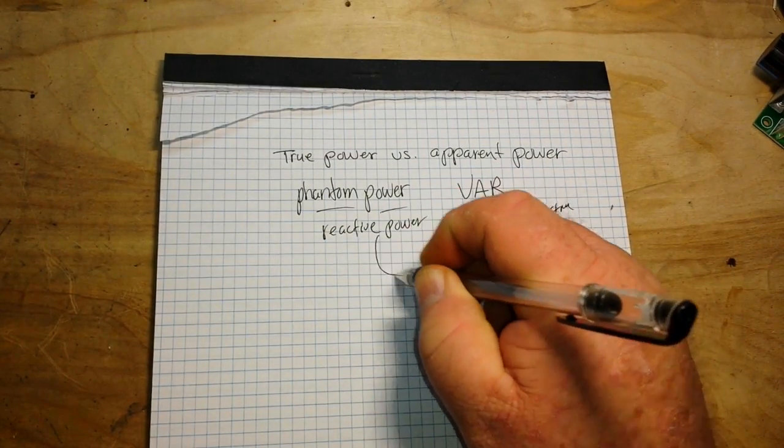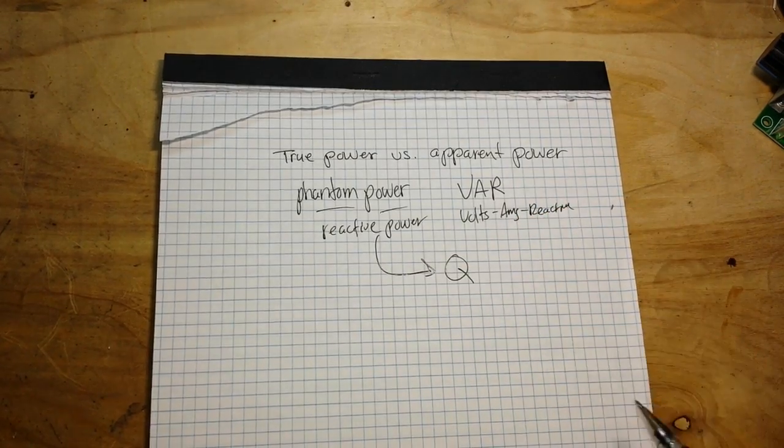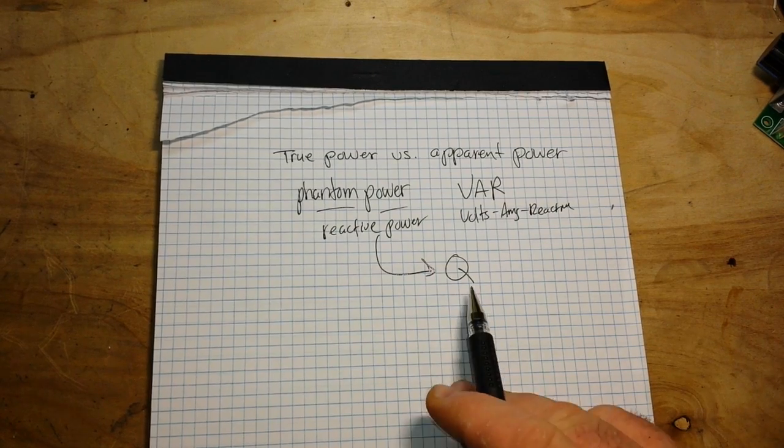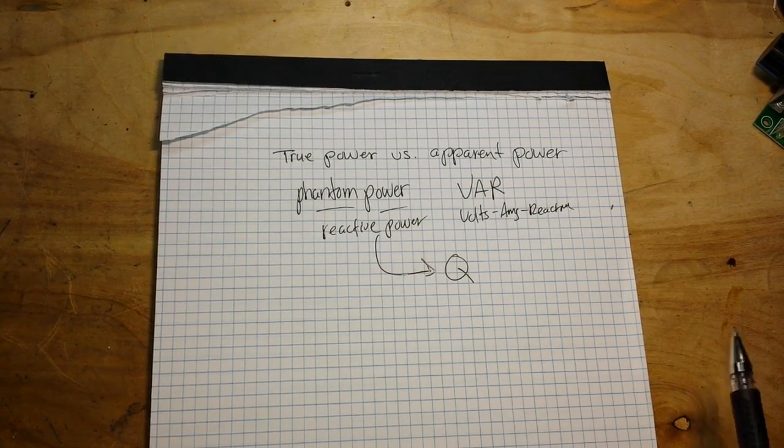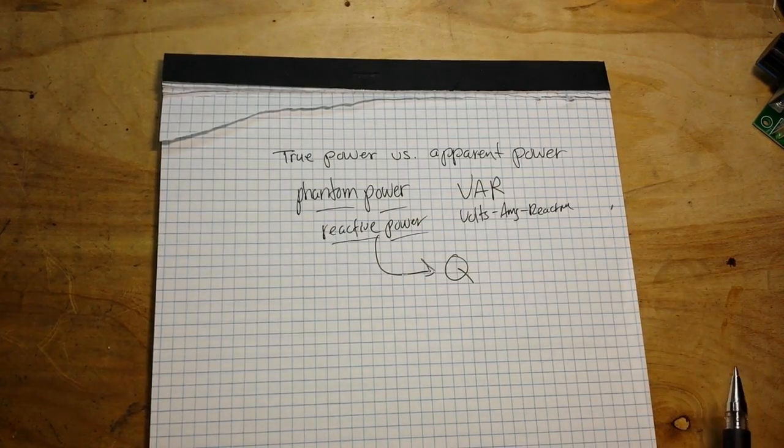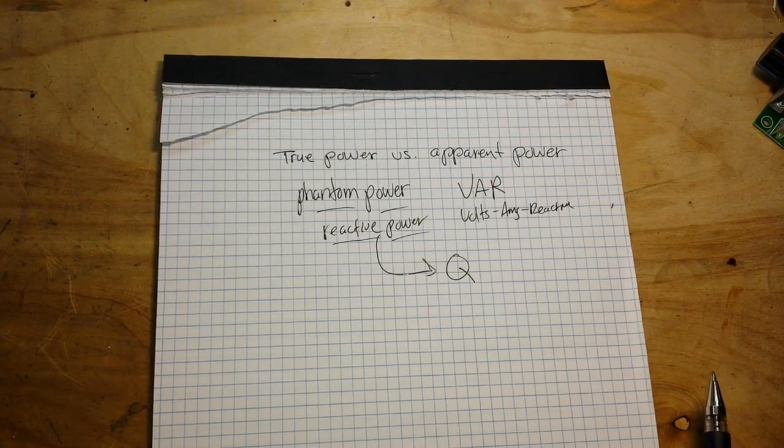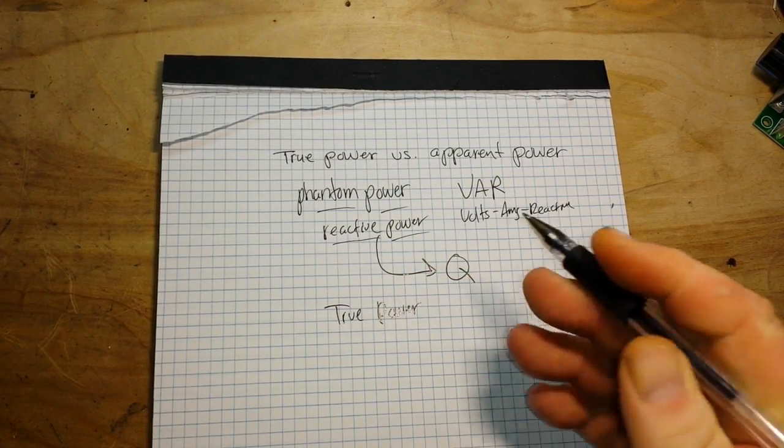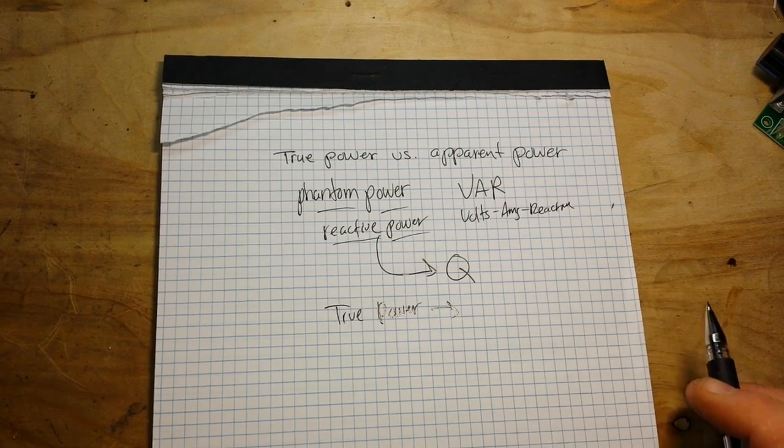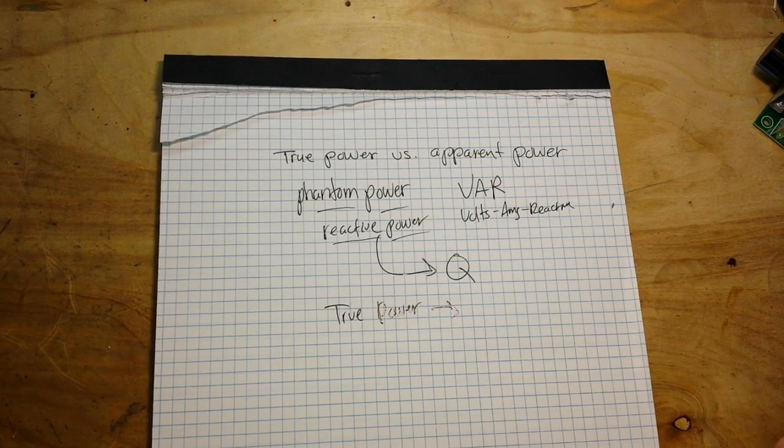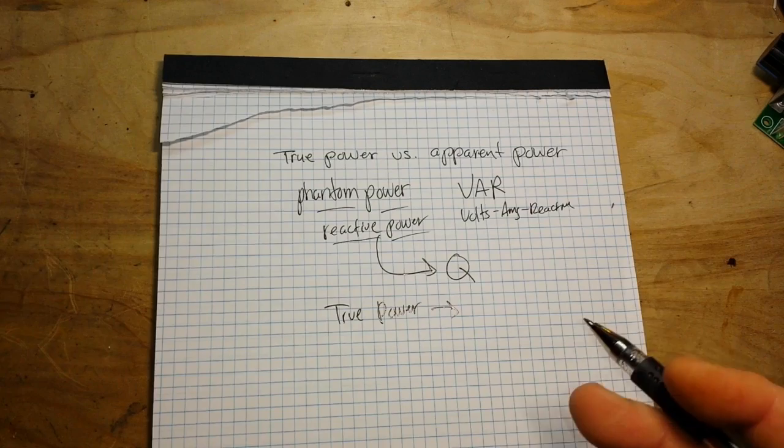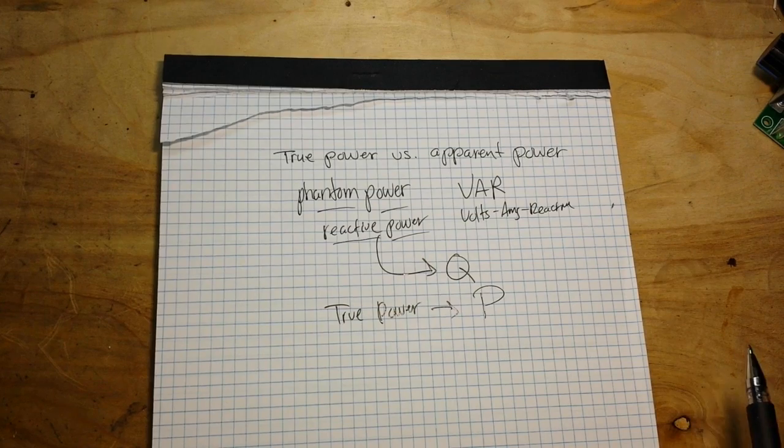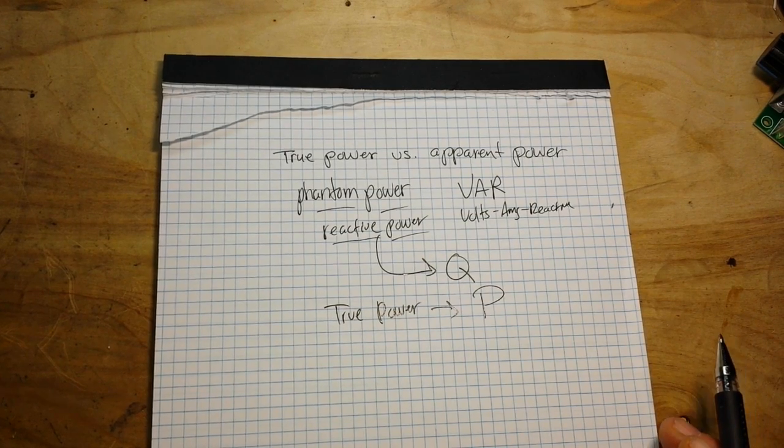And what we call this is phantom power. It's measured in what's called VAR, and that is volts-amps-reactive. And another word for phantom power is reactive power. Our symbol for reactive power is probably one of the most overused symbols in electricity and electronics, and that is the capital Q. So we use the capital Q when we talk about reactive power.